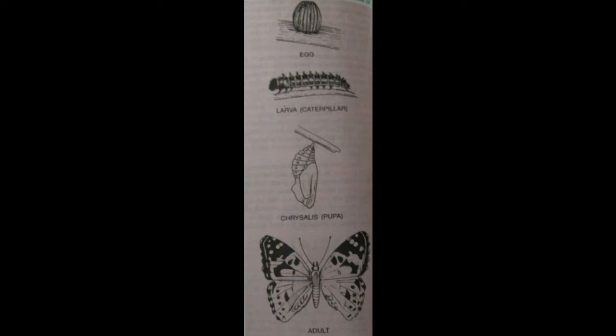The antennae are composed of an indefinite number of segments and vary greatly in length and structure. In the male they frequently show an increased development as compared with the female.